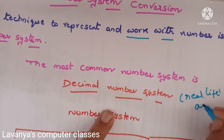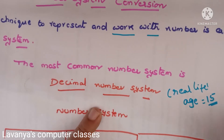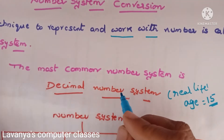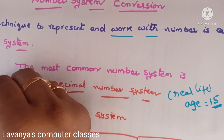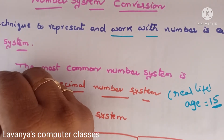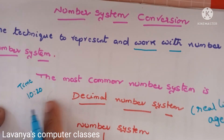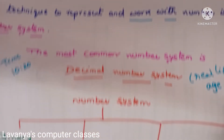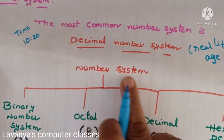For example, what is your age? We say my age is 15 years. So what is 15? 15 is a number, and it belongs to the decimal number system. Similarly, what is the time now? For example, the time is 10:20. So 10 and 20 are also numbers, and that is why they are called part of the number system.